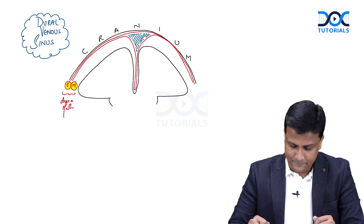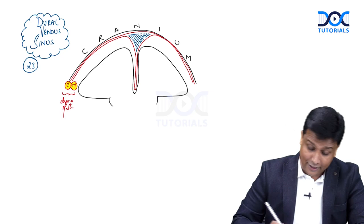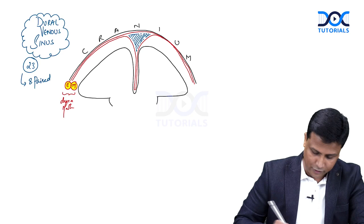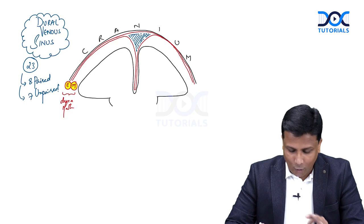There are a total of 23 dural venous sinuses. Out of those, 8 are paired sinuses, giving 16 total, and 7 are unpaired sinuses — so 16 plus 7 equals 23 dural venous sinuses in total.